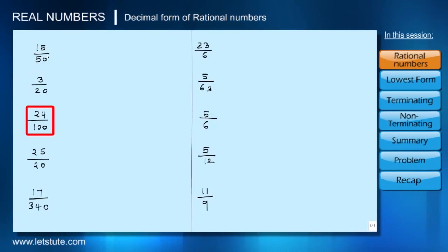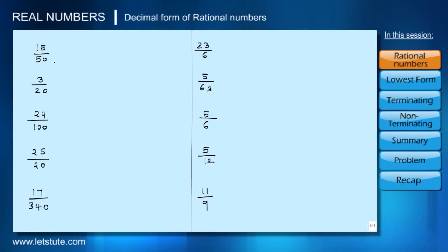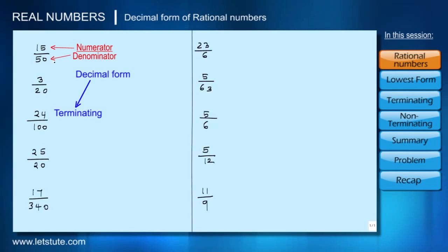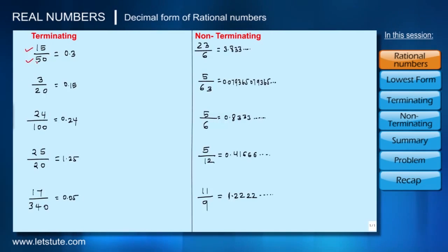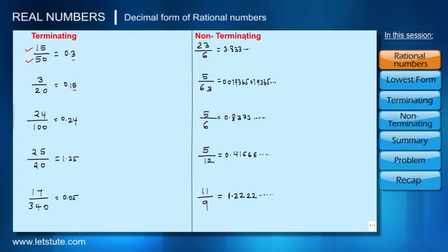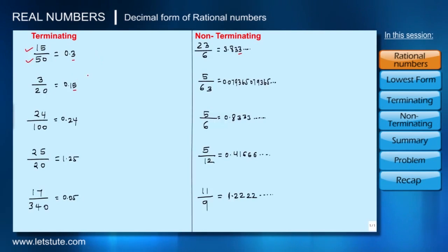Now, looking at a set of fractions, can you tell which have terminating decimal forms and which do not? Normally, you would divide the numerator by the denominator to get the decimal form and check. On dividing, we can see that the first five fractions are terminating and the next five are non-terminating. For example, 23/6 has the digit 3 repeating forever, and 5/63 has digits 0,7,9,3,6,5 repeating.